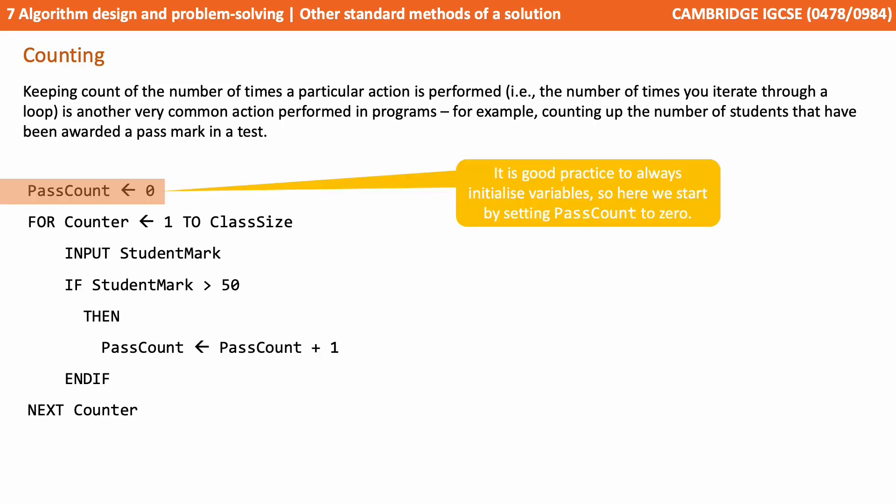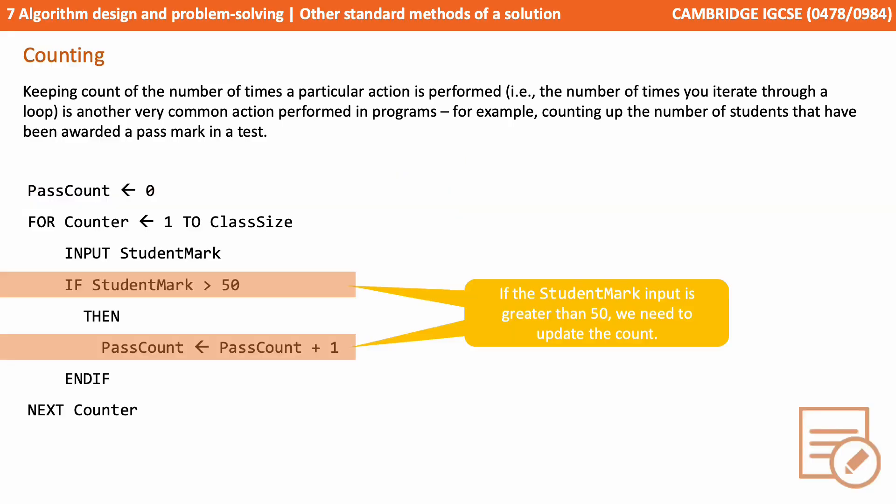So here again we can see our good practice. We've initialized our pass count variable to start at zero. Here inside our loop we can see that if the student count being looked at has a mark greater than 50 then we need to update our count.